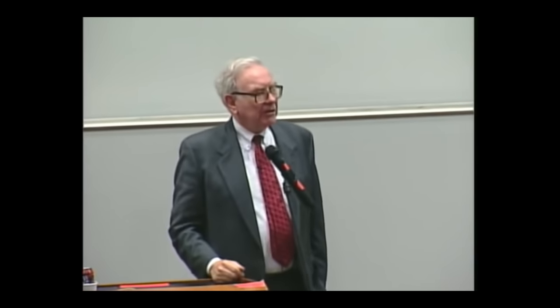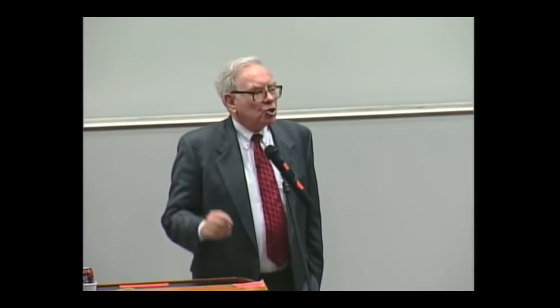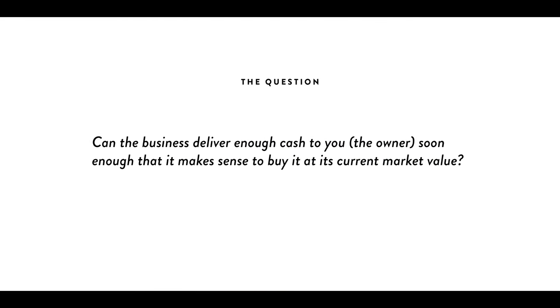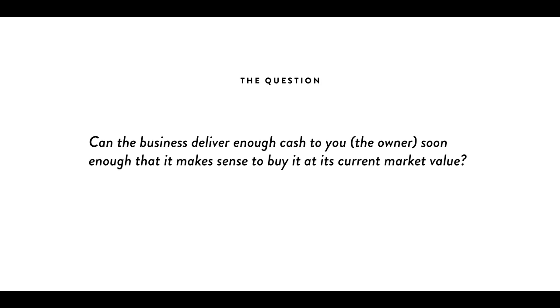Berkshire has never distributed anything to its shareholders, but its ability to distribute goes up as the value of the businesses we own increases — we can compound it internally. But the real question is: Berkshire's selling for, say, $105 billion now. If you're going to buy the whole company for $105 billion now, can we distribute enough cash to you soon enough to make it sensible at present interest rates to lay out that cash now? And if you can't answer that question, you can't buy the stock.